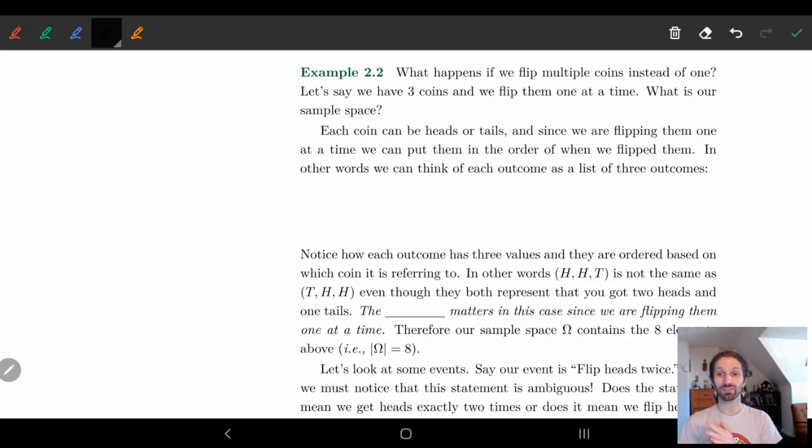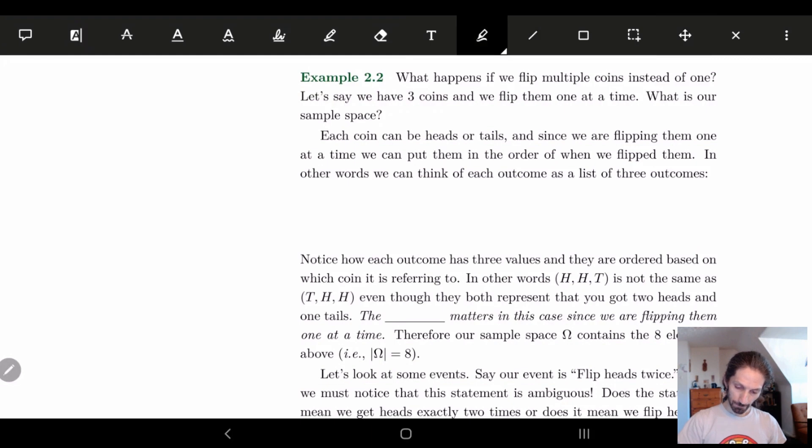Hi! So now we're going to continue on by actually working on a fuller example, something that's a little more complicated and has some common student mistakes. We're going to start at the very beginning and look at something more complicated. Example 2.2: what happens if we flip a coin multiple times? In this case we're going to flip the coin three times. The first question is: what is our sample space?